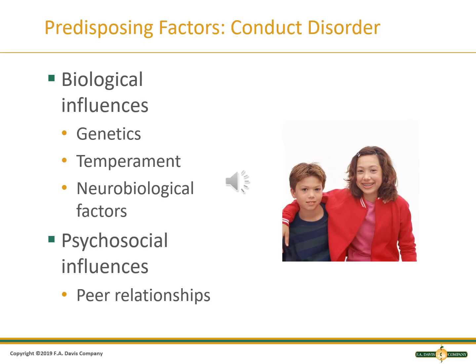Predisposing factors for conduct disorder: There is some belief that genetics may play a part, but environmental risk factors may also be an influence. The temperament of a child can be seen as early as birth and up to age two. If a child shows irritable temperament, poor compliance, inattentiveness, or impulsiveness, it is quite common that they may develop conduct disorder later in life.